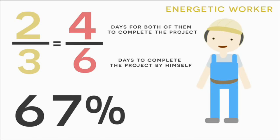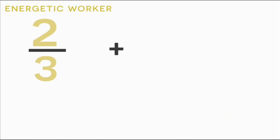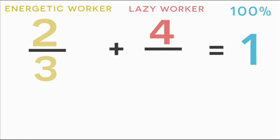And now, we can add the percentage of the project that the lazy worker completes. And together, it should equal 100%, or one. So what is the percentage of the project that the lazy person completes? Well, we don't know exactly how long it would take him by himself to complete the project, but we do know that it takes him four days to complete the project together with his partner. So in the numerator of this fraction of the work that the lazy man completes, we're going to put the number four.